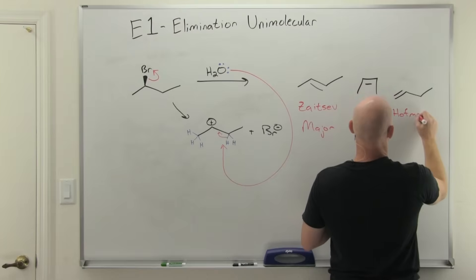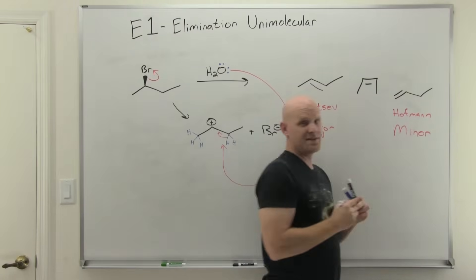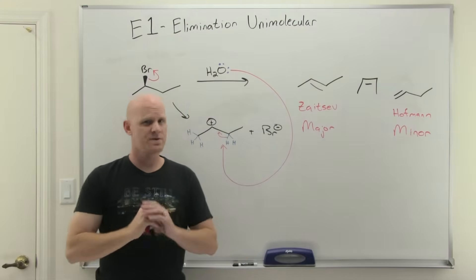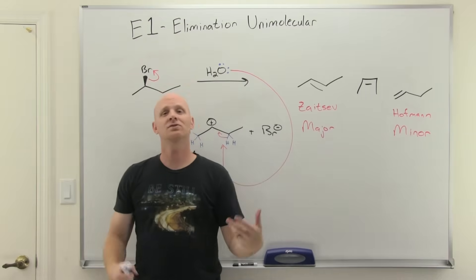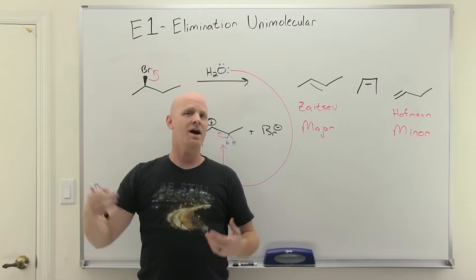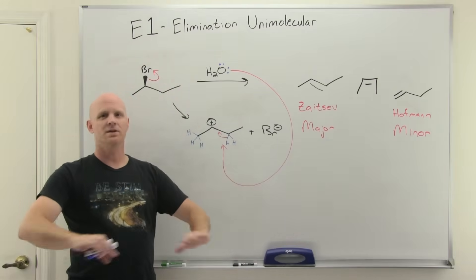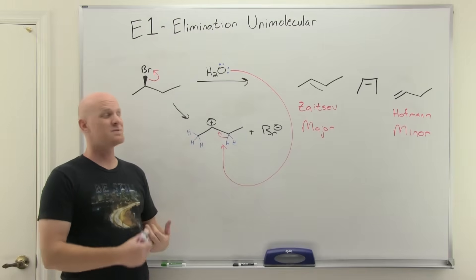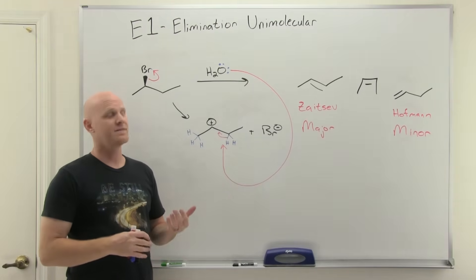The Hoffman product is minor, and this is pretty much how it works for all E1 reactions. E1 always follows Zaitsev's rule — Zaitsev is major, Hoffman is minor. For E2 it depended on bulky bases, anti-periplanar hydrogens, or bad leaving groups, but for E1 you always follow Zaitsev's rule. Sometimes you have to worry about carbocation rearrangements, but you're always simply going to follow Zaitsev's rule.